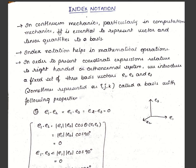In this video we shall see the index notation, which is very important in continuum mechanics. We need to represent vector and tensor quantities in the Cartesian coordinate system. This is helpful in mathematical operations for presenting coordinate expressions relative to a right-handed orthonormal system. The right-hand rule means using three mutually perpendicular fingers representing the x, y, and z axes. We can introduce a fixed set of basis vectors e1, e2, and e3.